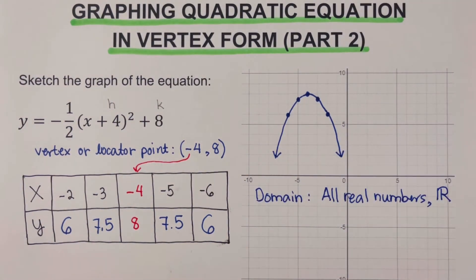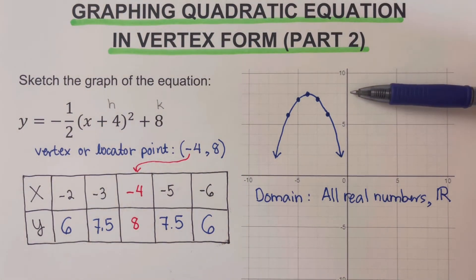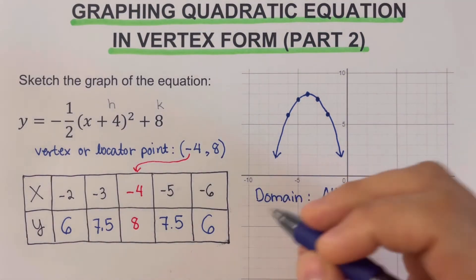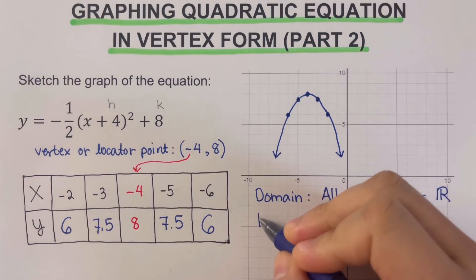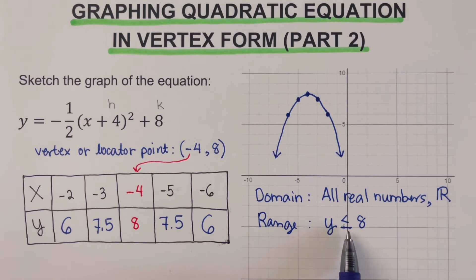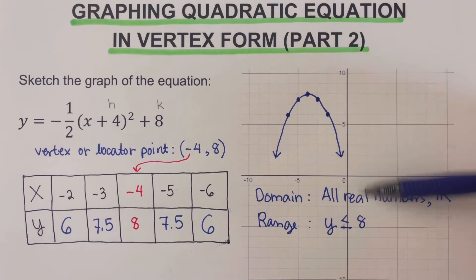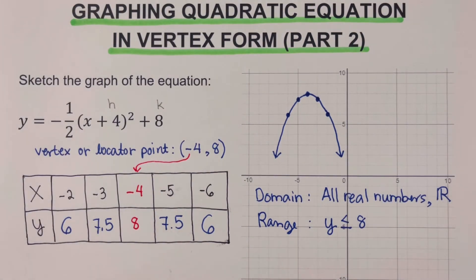The range refers to the values of y. Since the parabola starts at the vertex y = 8 and opens downward, the range is y less than or equal to 8. Now let's move on to the next example.